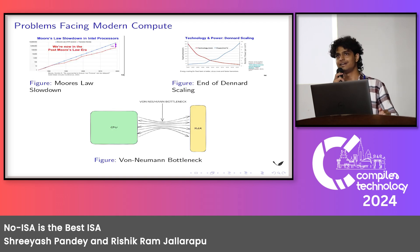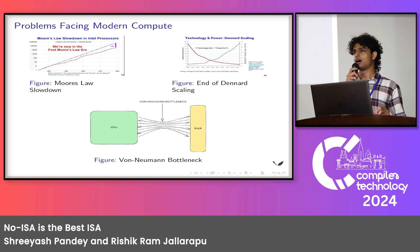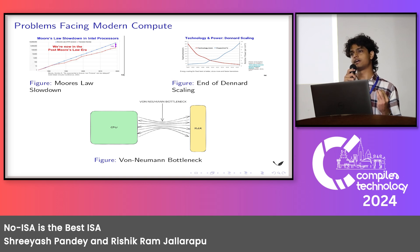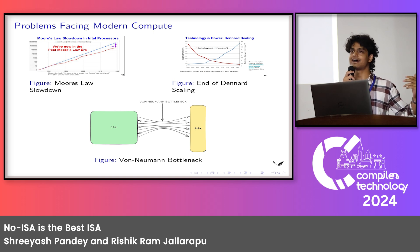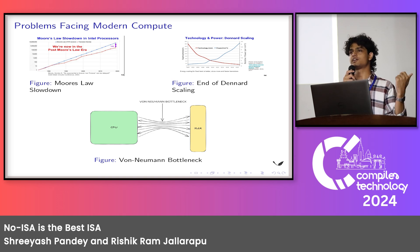Back in 1975, Gordon Moore of Intel observed an interesting thing in chip design: that every 18 months the number of transistors in a chip doubled. At the same time, Robert Dennard also observed that as the number of transistors grew, the power consumed per nanometer square of a chip remained constant. And way back in the 1940s, John von Neumann suggested a general model for a computer where we have a CPU, a RAM, and a channel between them. The RAM contains instructions and data, and the CPU fetches instructions and data and runs them.